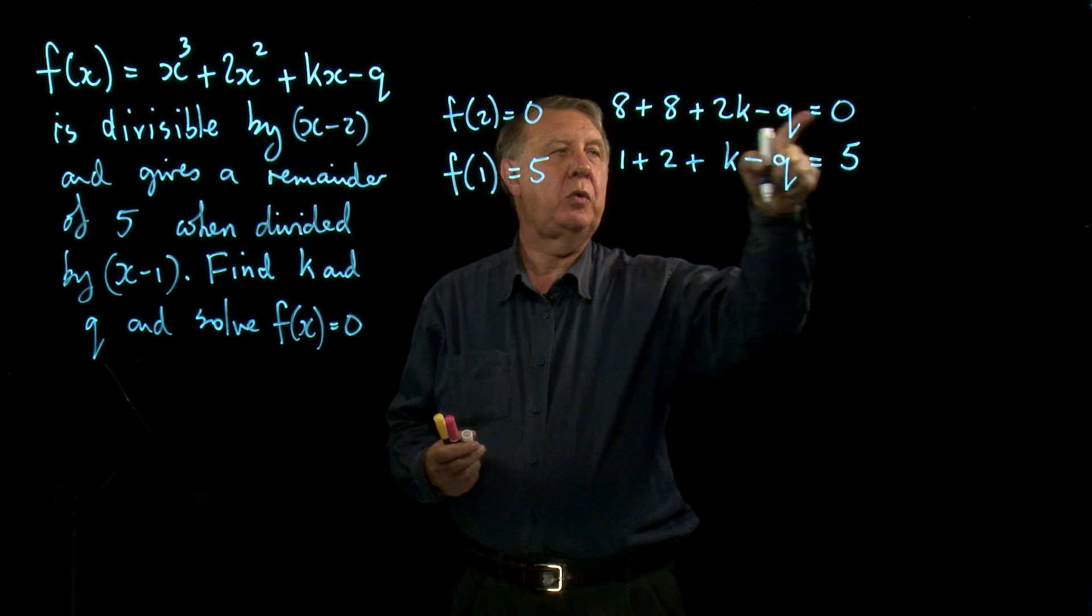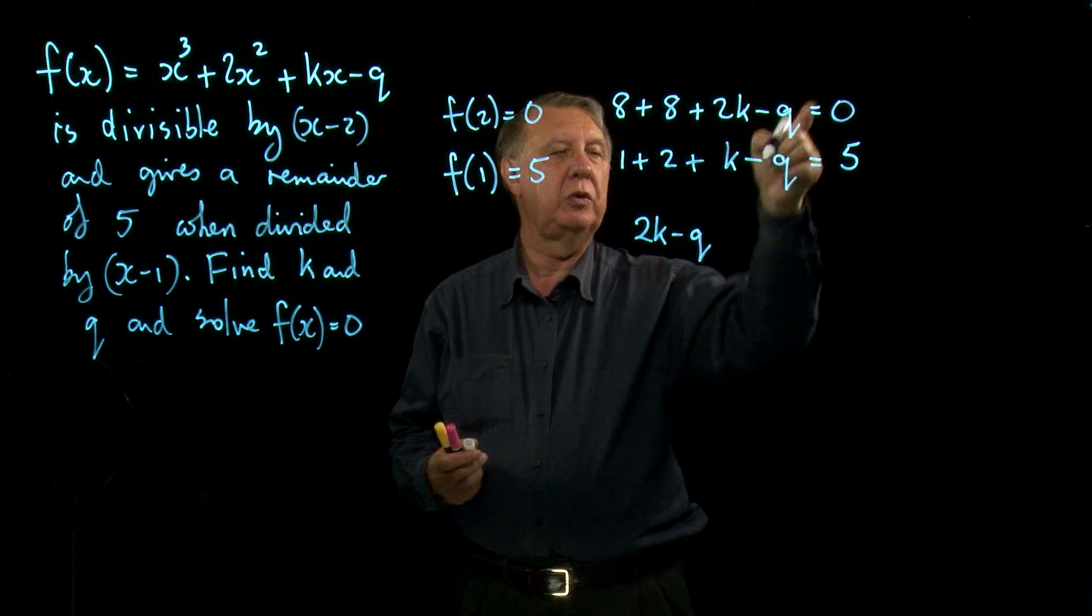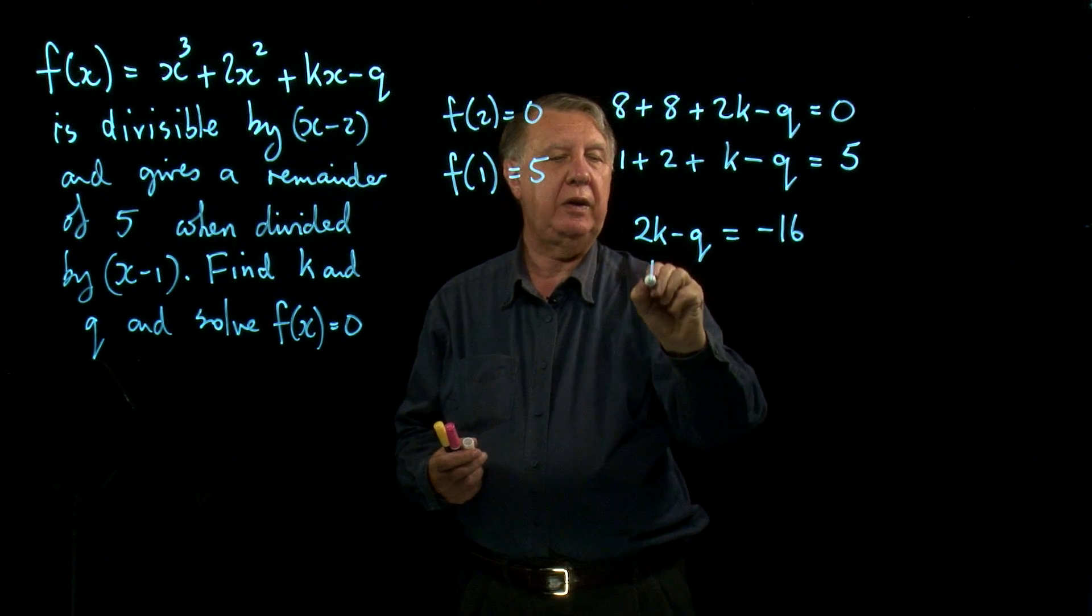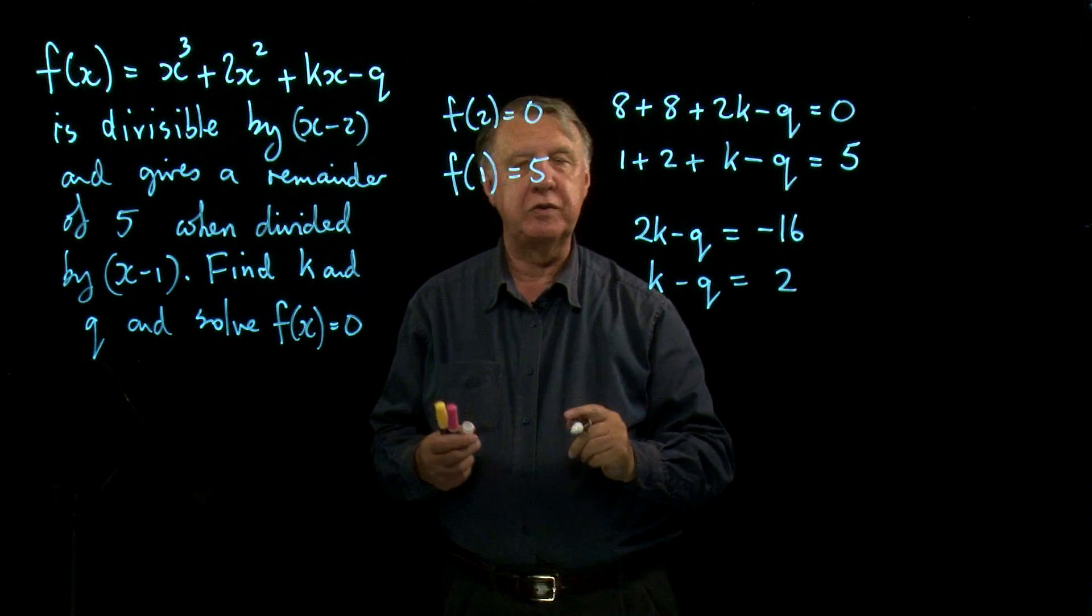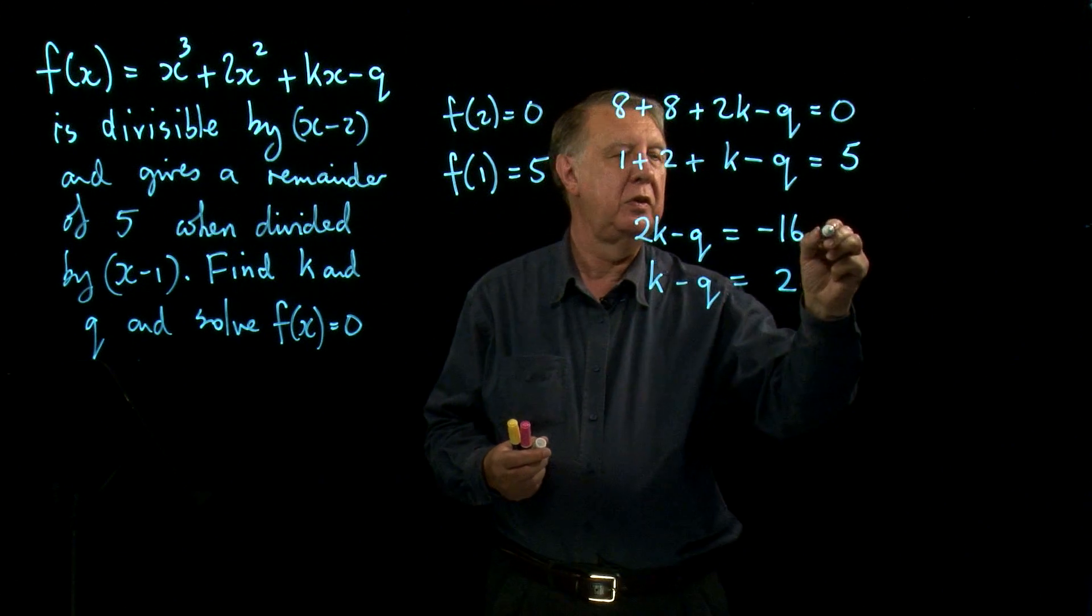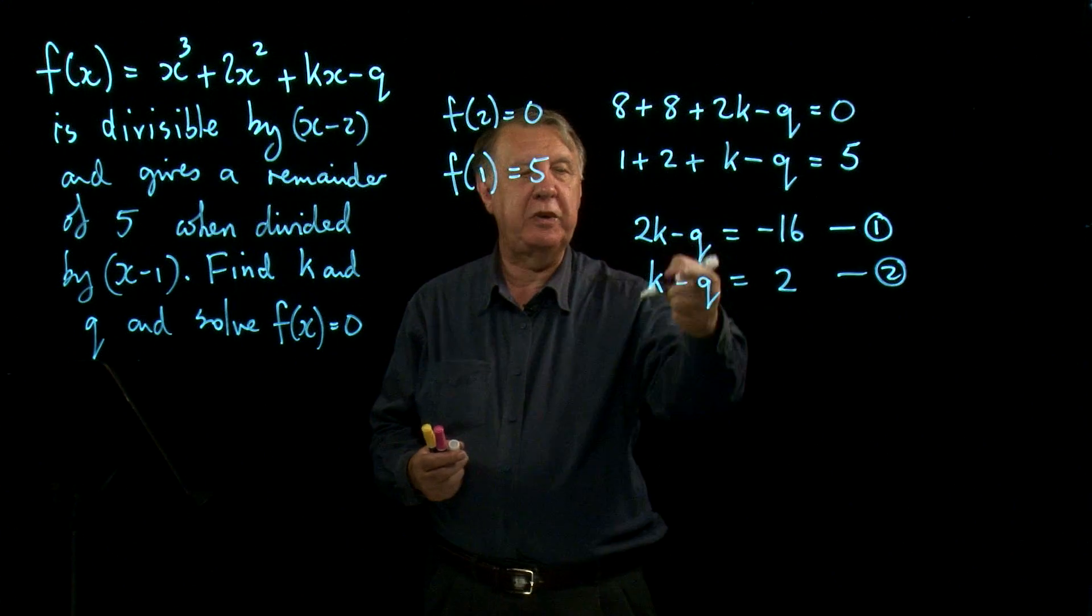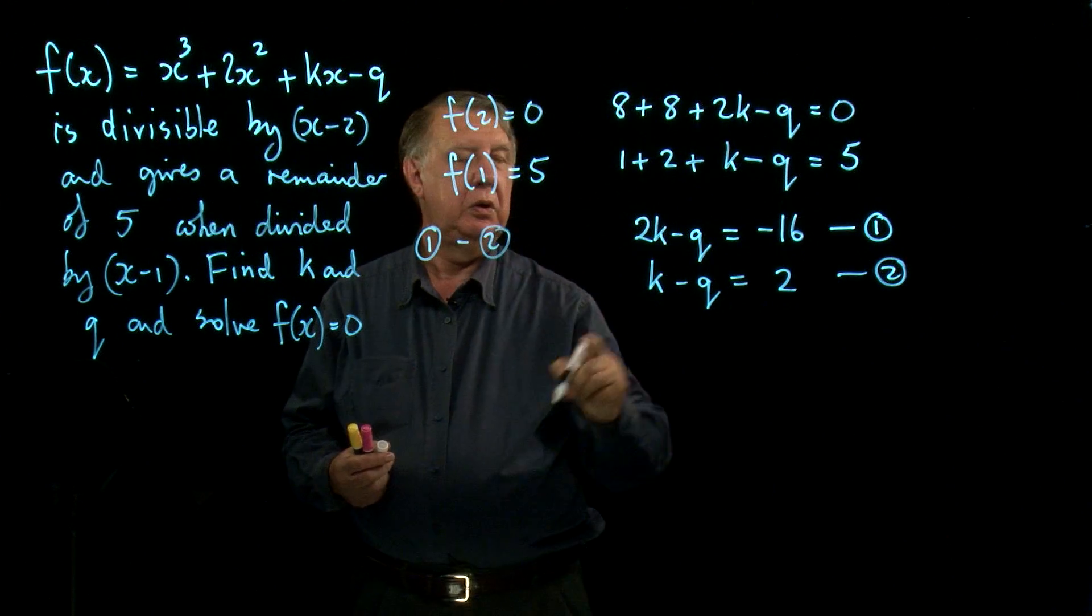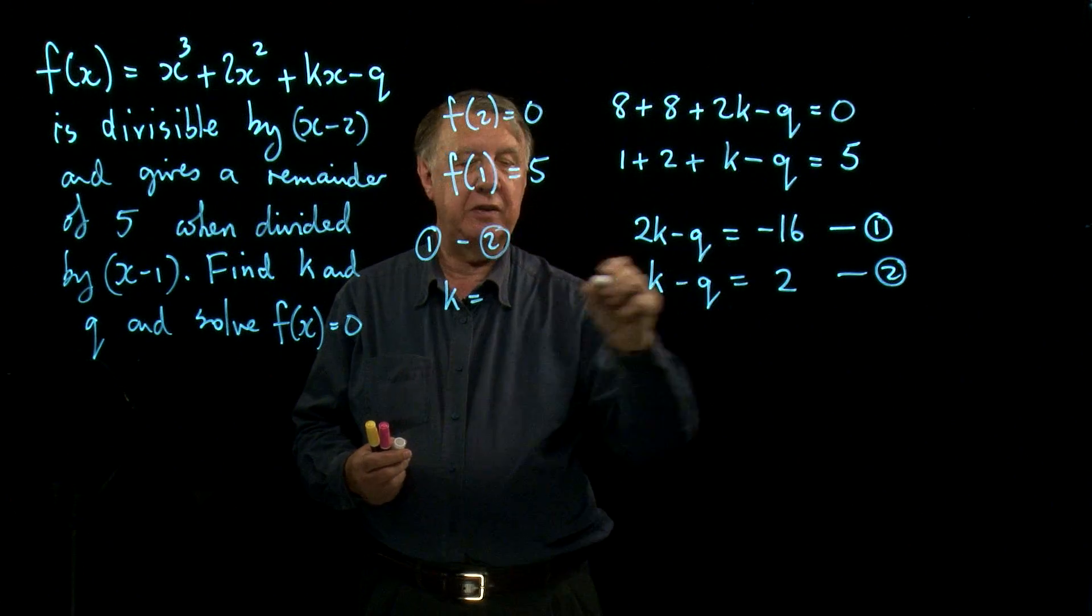So our first equation is 2k minus q equals minus 16. And this one, k minus q, three here to take away from five equals that. So we have a pair of very simple simultaneous equations and the easiest way to solve them is to subtract because they both got negative q. So one take away two gives me k equals negative 18.